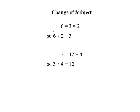Another example: we want to change the subject of this equation, 6 equals 3 times 2, to make 3 the subject. So we know that the 3 is going to stay and we're going to take the times 2 over to the left hand side. When it crosses over, it's going to become a divide, so 6 divided by 2 equals 3.